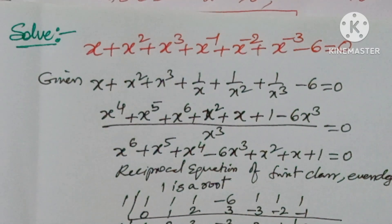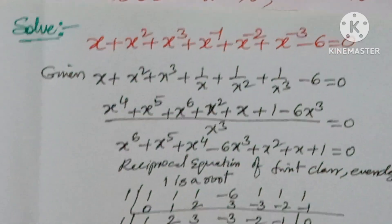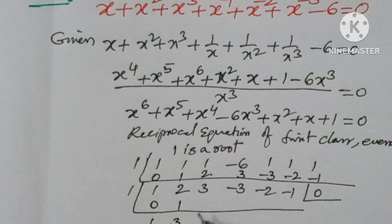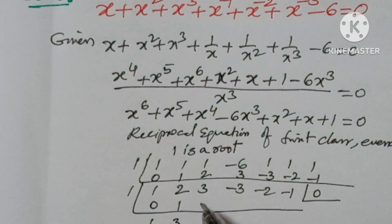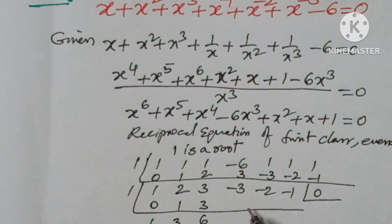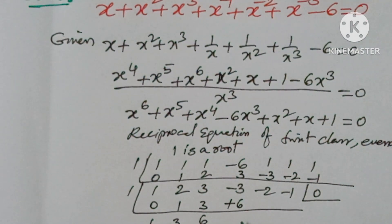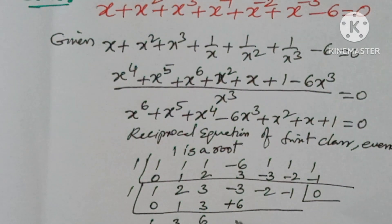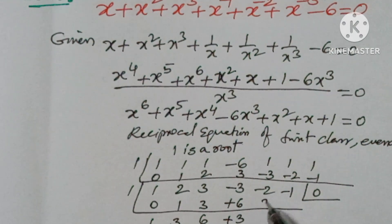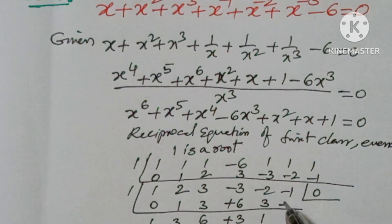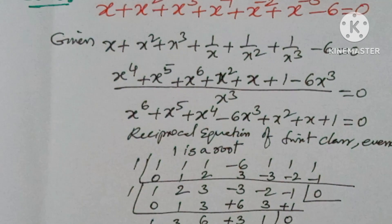Again 1 is a factor here. Repeating the process: 0, 1, 3, 6, plus 3, plus 1, 0.